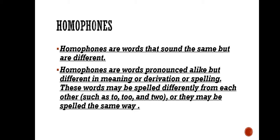So homophones are the words pronounced alike but different in meaning or derivation or spelling. These words may be spelled differently from each other such as to, too and two. T-O, T-O-O when you say a lot, you could say too much, too much big. And two, T-W-O, counting one, two, three, four.